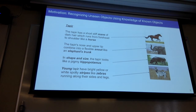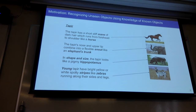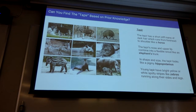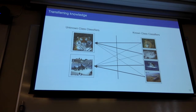Let's give an example. Suppose there is an animal called tapir. Let's assume you haven't seen a tapir before, but you have read about it. You've read that a tapir has a mane like a horse, a nose like a smaller elephant trunk, looks like a pygmy hippopotamus, and young tapirs have stripes like zebras. So even though you haven't seen a tapir, from those descriptions you can identify which ones are tapirs. We are transferring knowledge from known objects to recognize something completely unknown.